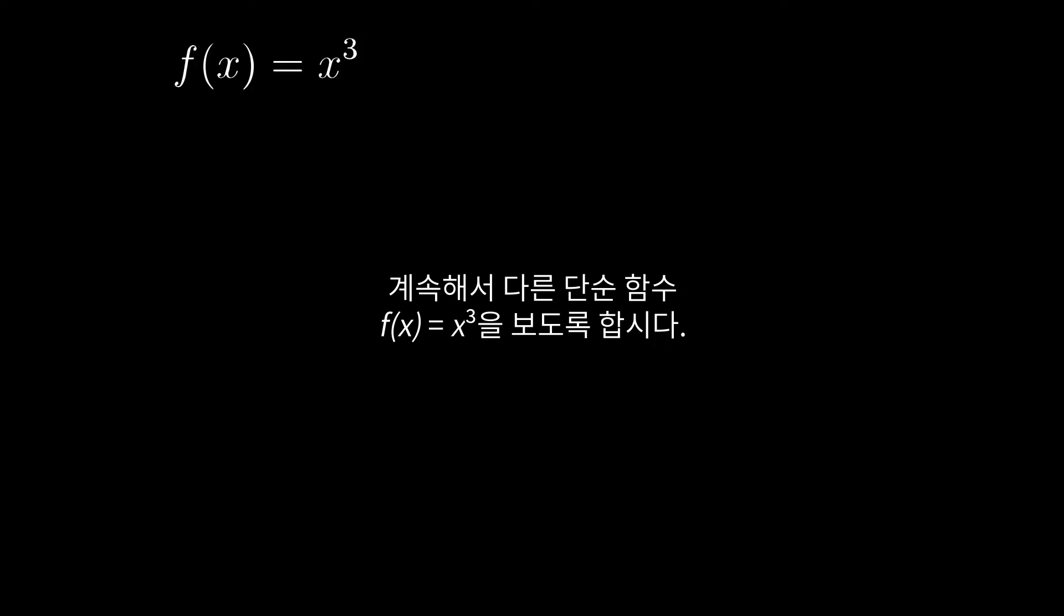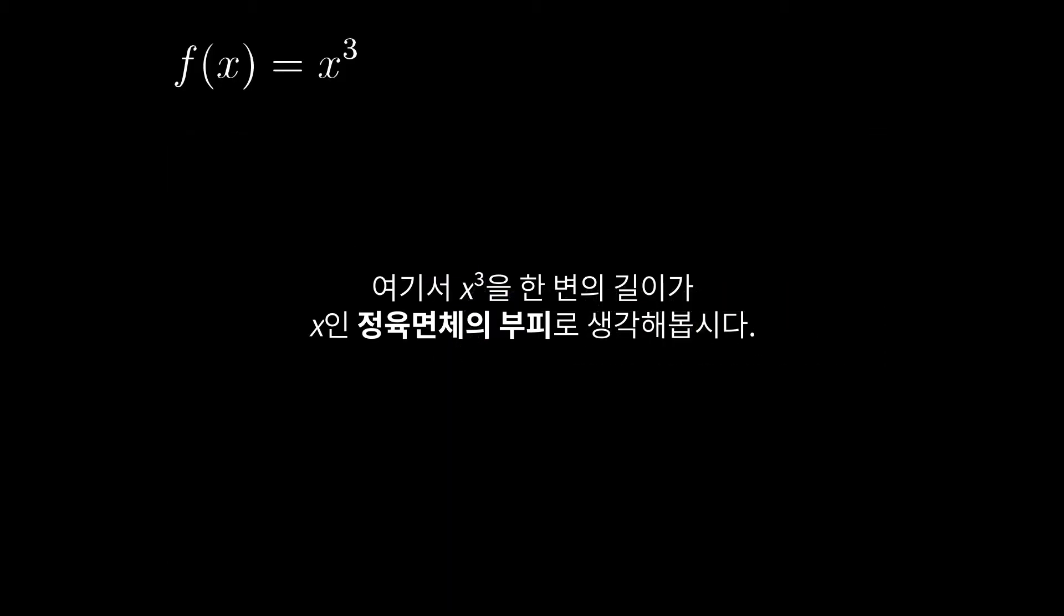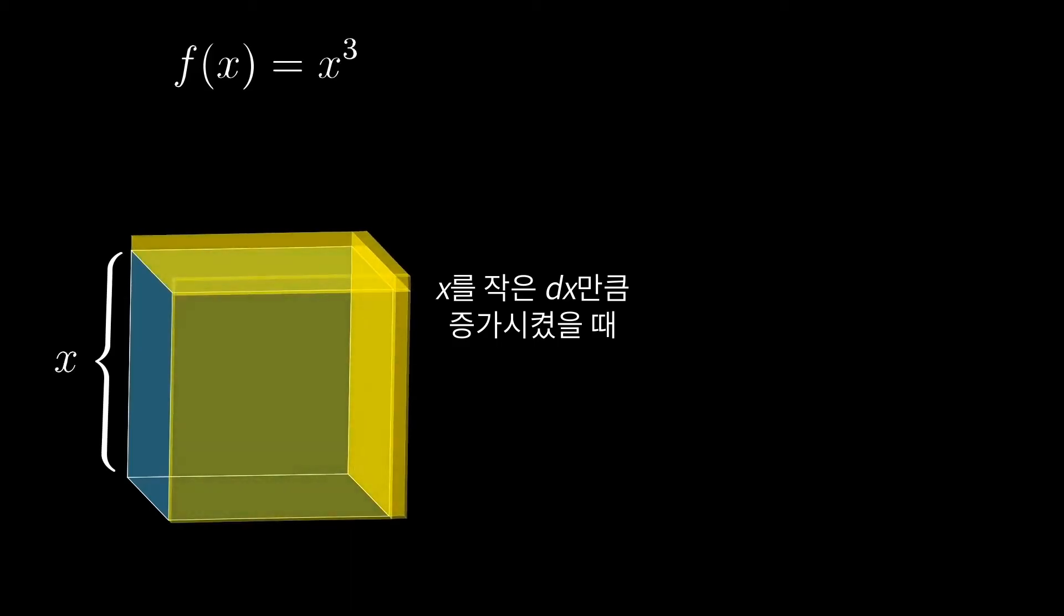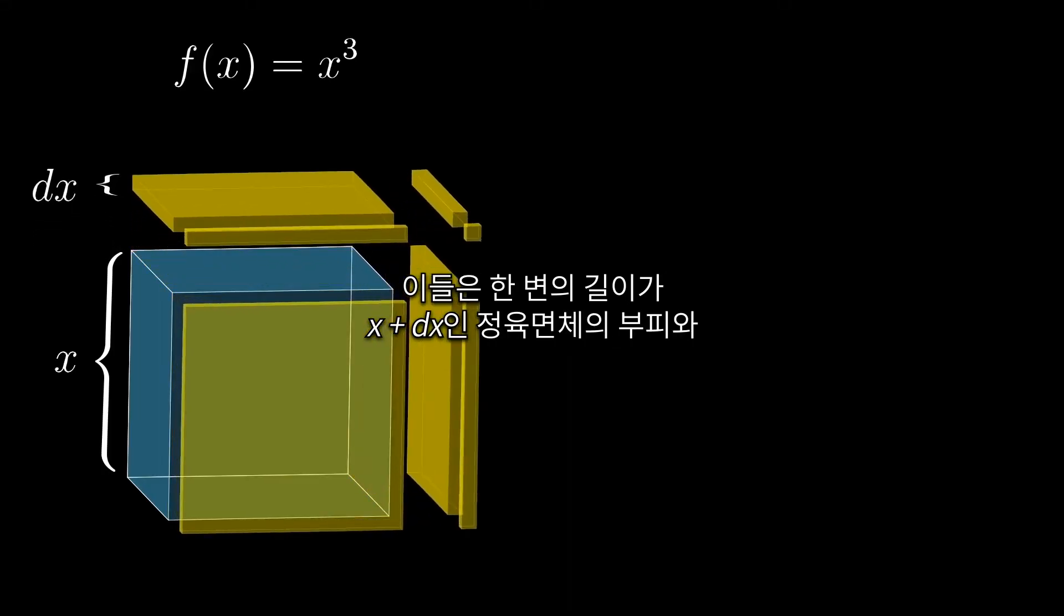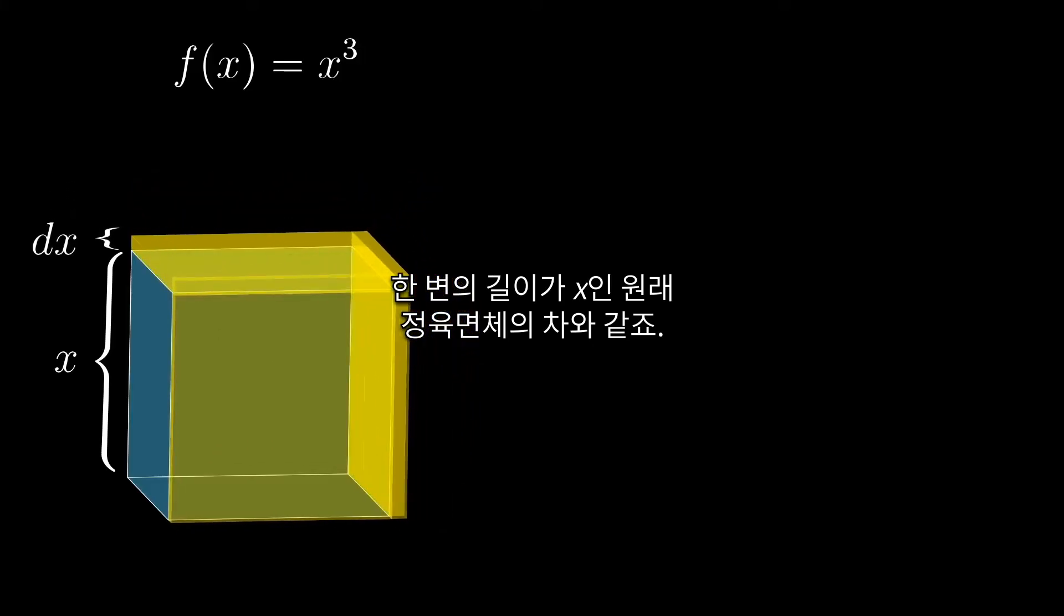Let's go ahead and try a different simple function, f of x equals x cubed. This is going to be the geometric view of the stuff that I went through algebraically in the last video. What's nice here is that we can think of x cubed as the volume of an actual cube, whose side lengths are x. And when you increase x by a tiny nudge, a tiny dx, the resulting increase in volume is what I have here in yellow. That represents all the volume in a cube with side lengths x plus dx that's not already in the original cube, the one with side length x.